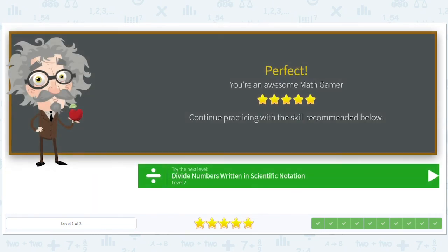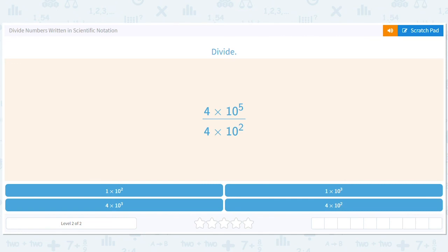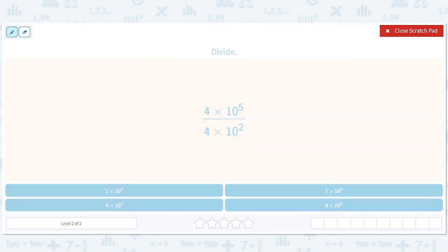Do a couple level 2's. Call it a day. All right, here we go. These just cancel out or if you want, you can say 4 divided by 4 is 1 times 10 to the 5 minus 2 is 3. So 1 times 10 to the 3.